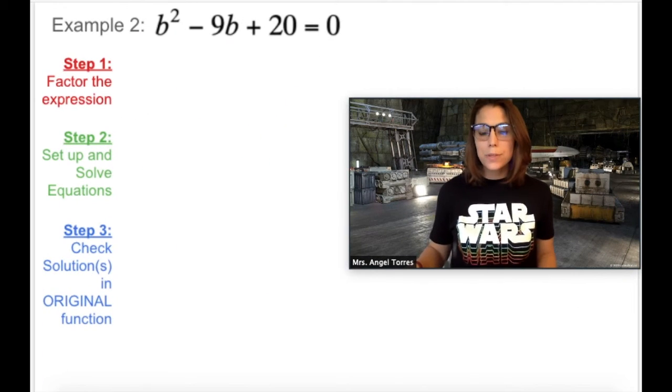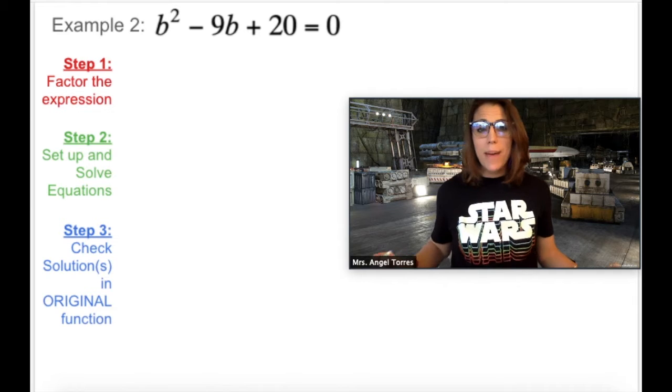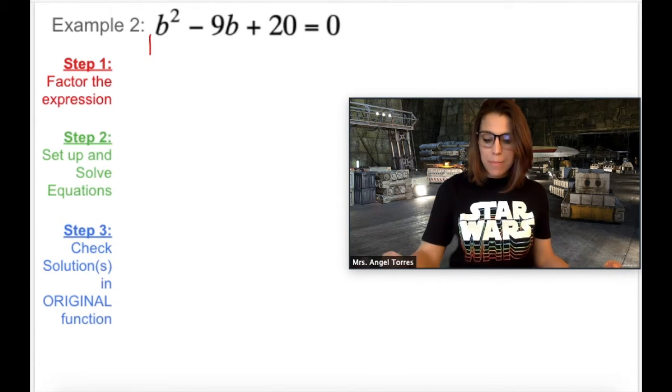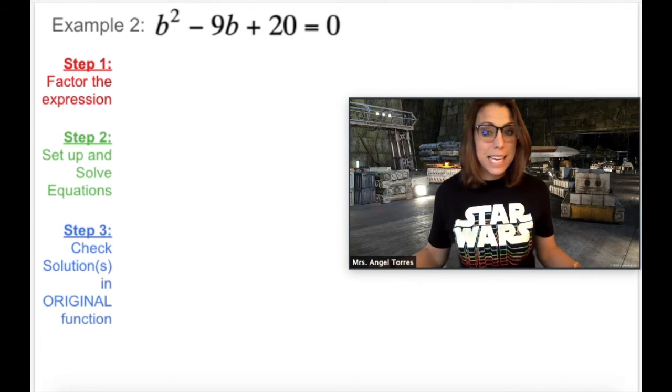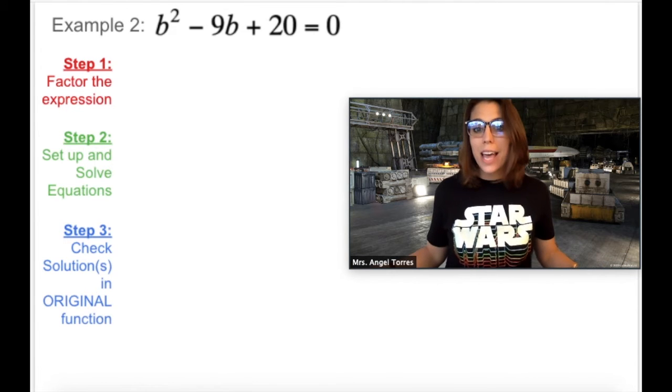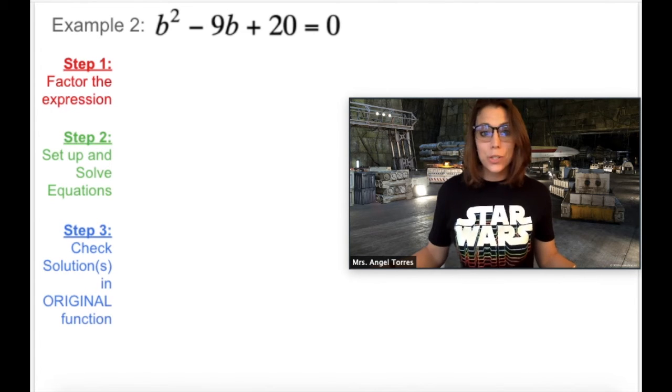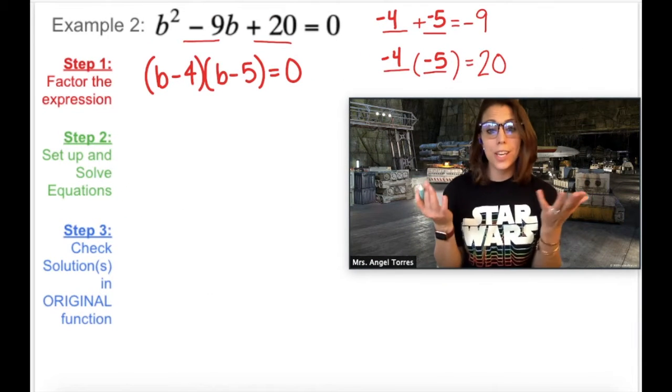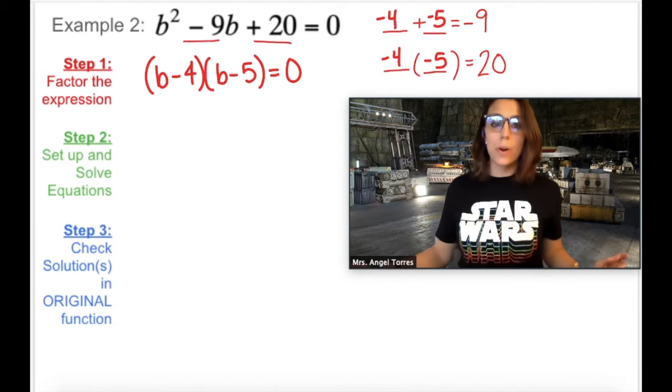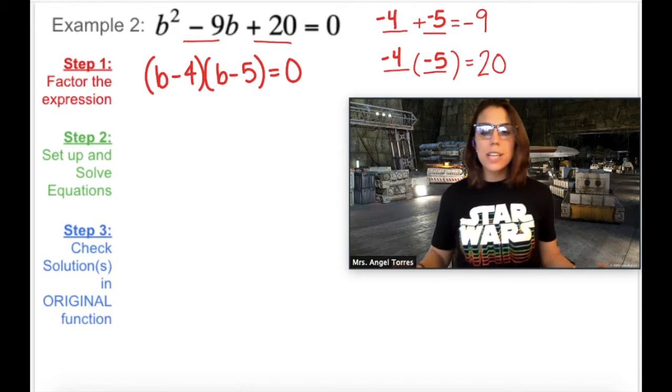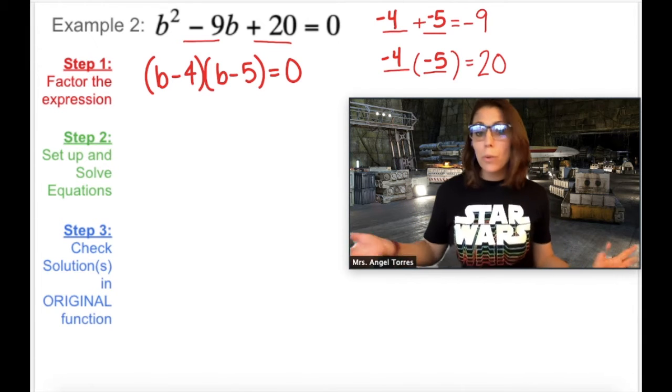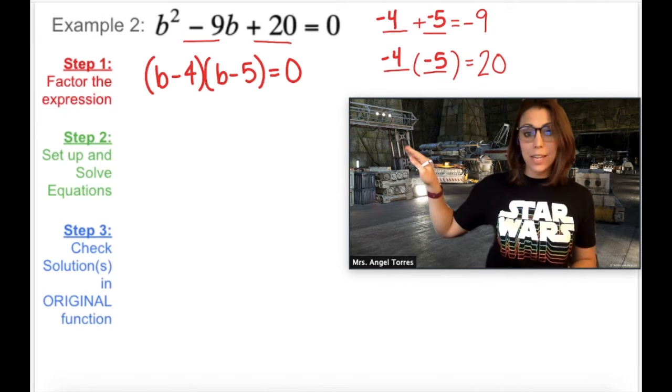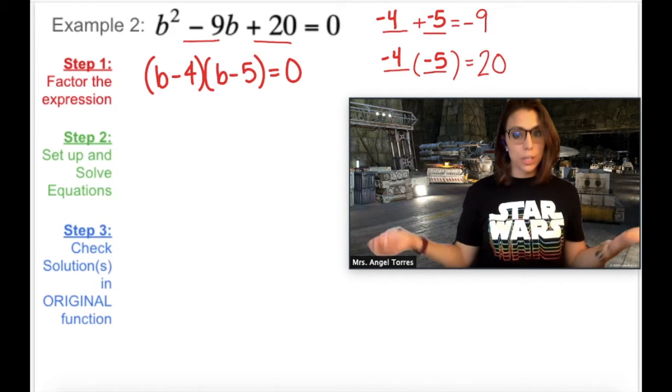All right, on to example 2. Right off the bat I see it is a trinomial with a leading coefficient of 1, which again means that we're going to factor this using P's and Q's. So go ahead and try factoring this into intercept form now. Great work. So hopefully you would have ended up with negative 4 and negative 5, meaning B minus 4 times B minus 5 equals 0. What did we just do? We took a quadratic out of standard form and put it into intercept form. So now we can use our zero product property.